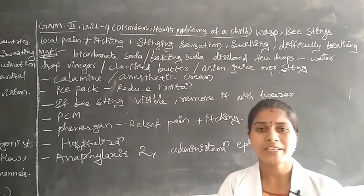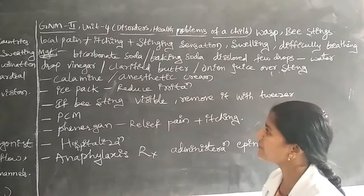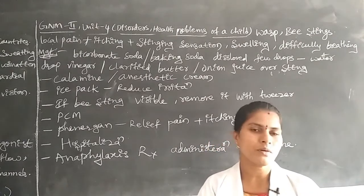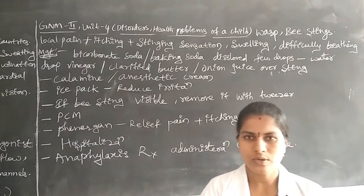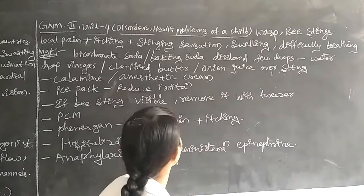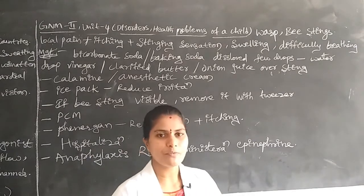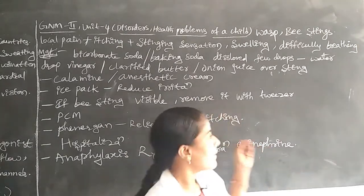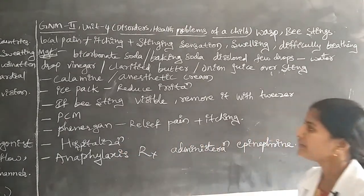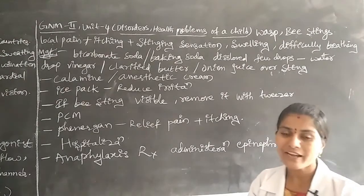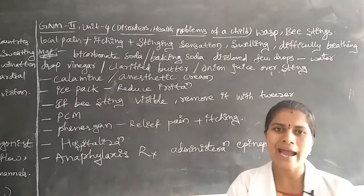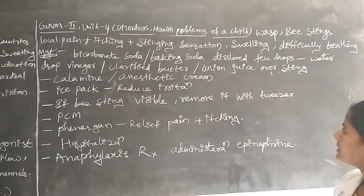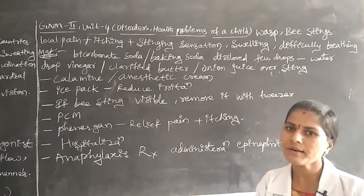Now we will discuss management for bee and wasp stings. Especially, we have to administer one home remedy: bicarbonate soda — simply baking soda, which is used in food preparation. We take baking soda and dissolve it in a few drops of water. After dissolving, we add a drop of vinegar or clarified butter, whichever is available.